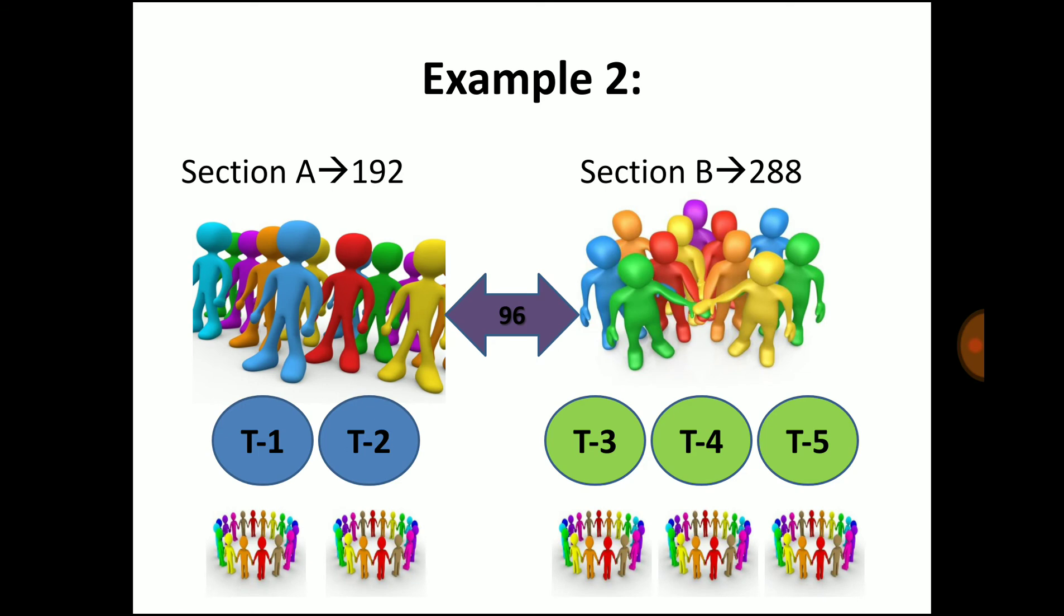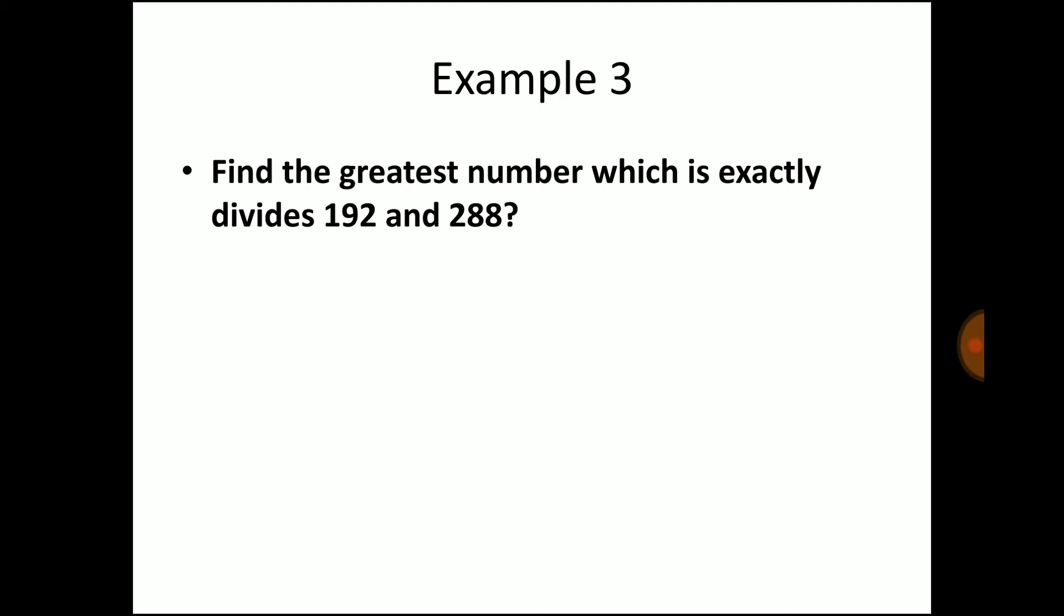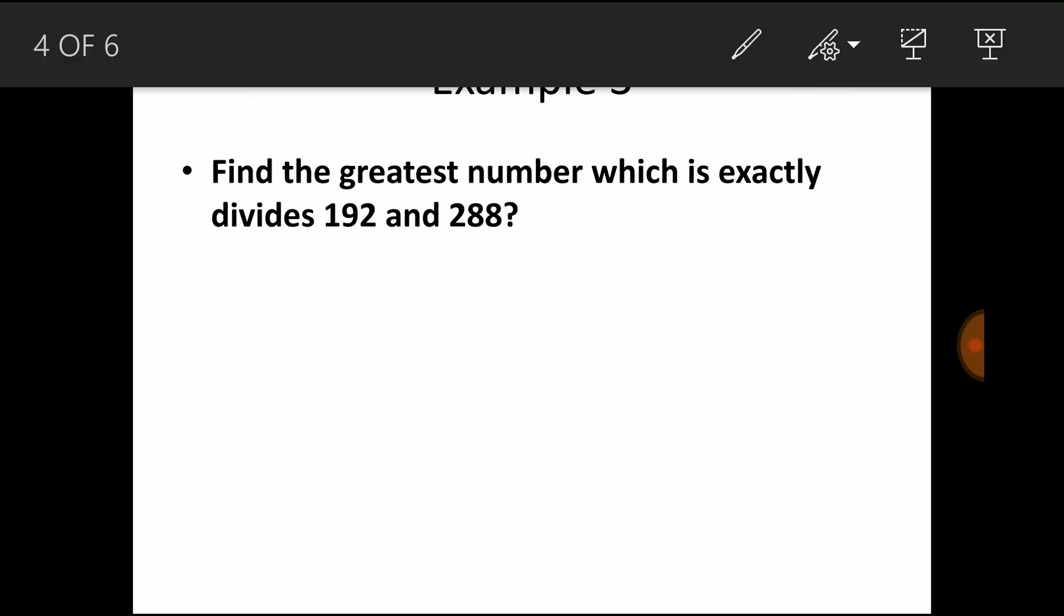Moving to third example. Find the greatest number which exactly divides 192 and 288. In the start of video I said, HCF is the greatest number which exactly divides all the given numbers. 192 and 288 is divisible by 2, 4, 8, 16 and so on. But here the answer lies in highest common factor. The HCF of 192 and 288 is 96. So 96 is the greatest number which exactly divides 192 and 288.